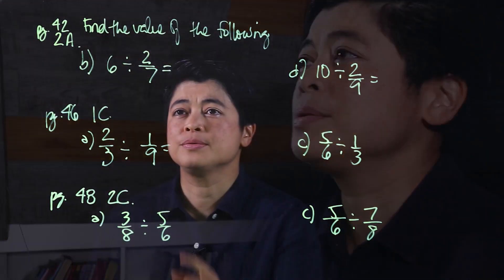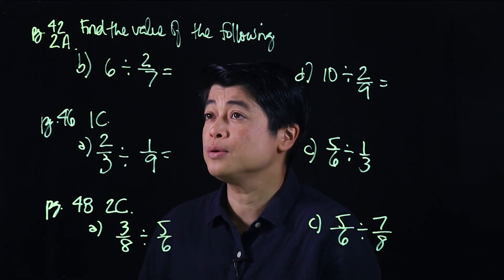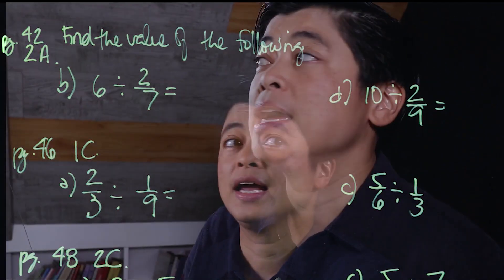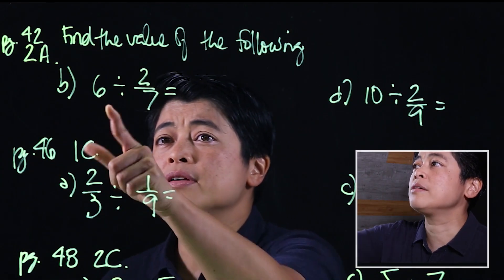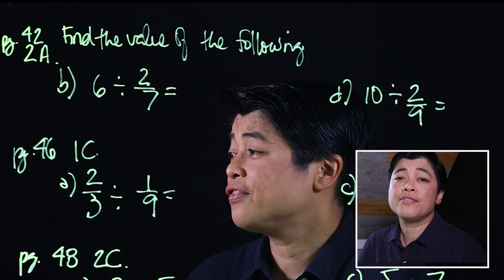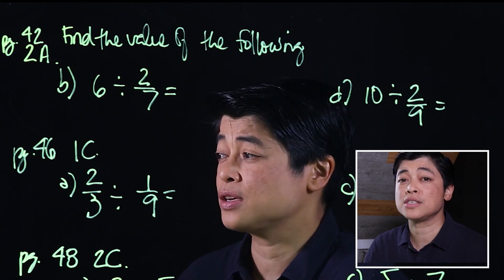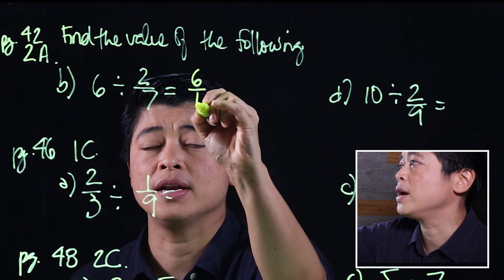From the problems we have, it says find the following value. Since these are fractions, we have to remember to put them in simplest form. On page 42, number 2, I selected letters B and D. Remember, since we have fractions, we'll make everything a fraction. So if you see a 6, which is a whole number, just write it as 6 over 1.